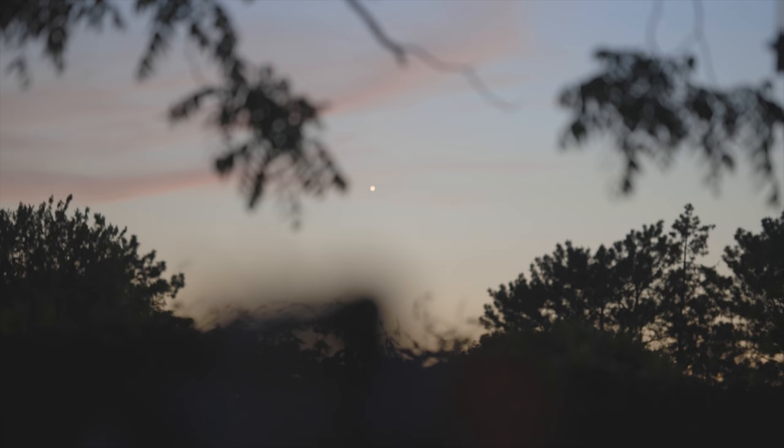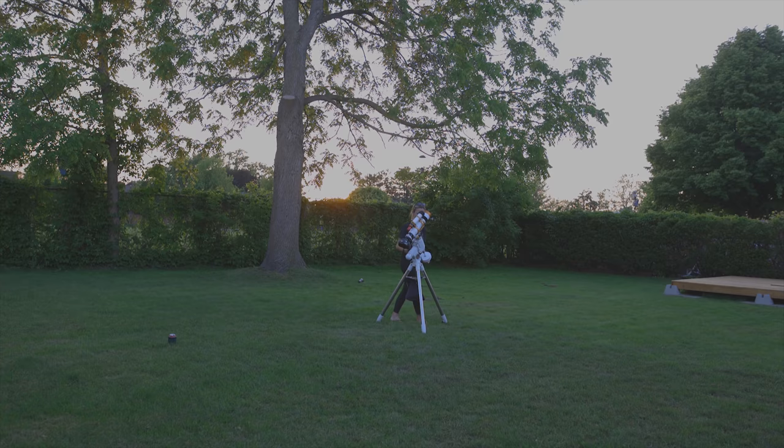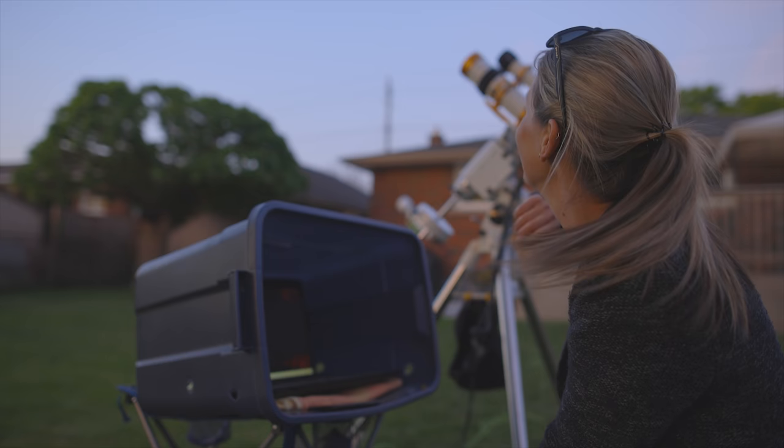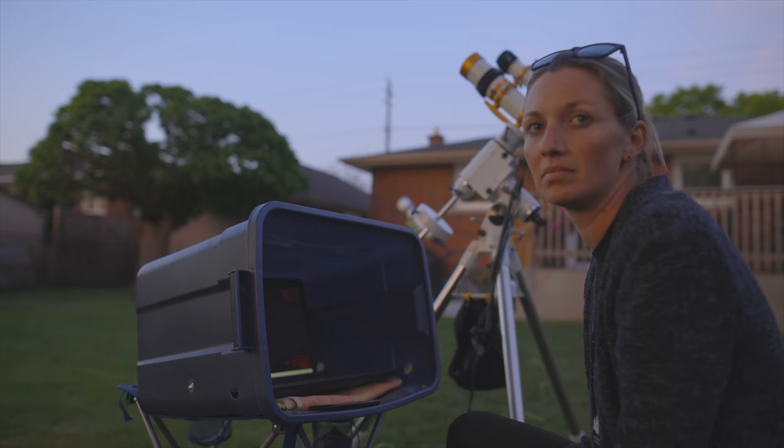We're just waiting for it to get a little bit darker out so we can polar align the telescope mount and then do things like star alignment and focus the guide camera and the telescope. The reason we're set up where we are in the yard is because the object Ashley's shooting, the North America Nebula, is going to be in the east, rising over the telephone wires by about 10:30 p.m. That's why we kind of got away from the house a little bit so we can start shooting that target a little bit earlier.